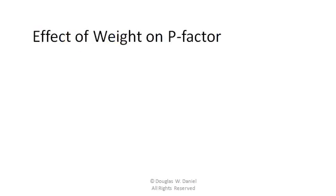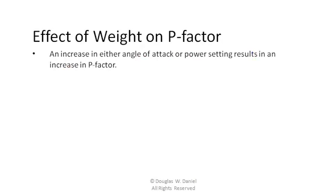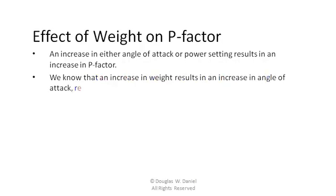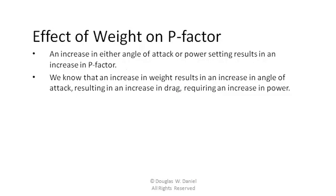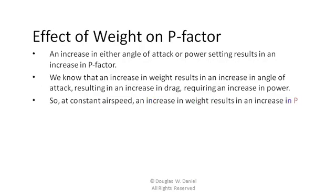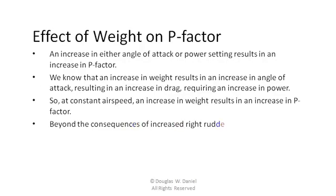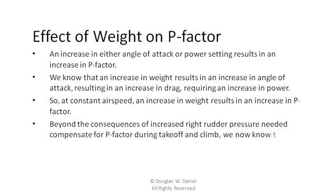Effective weight on p-factor: an increase in either angle of attack or power setting results in an increase in p-factor. We know that an increase in weight results in an increase in angle of attack, resulting in an increase in drag, resulting in an increase in power. So, at constant airspeed, an increase in weight results in an increase in p-factor. Beyond the consequence of increased right-rudder pressure needed to compensate for p-factor during takeoff and climb, we now know that it is also needed during steep turns.